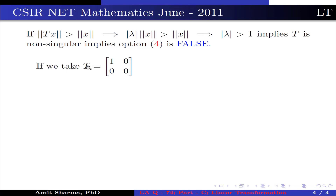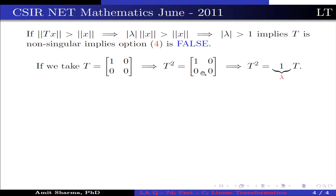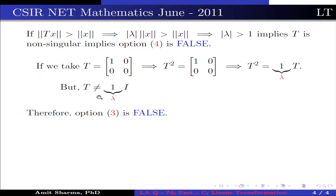If we take T as the 2×2 matrix with elements [1, 0; 0, 0], then T² = [1, 0; 0, 0], which implies T² = 1·T where λ = 1, but T is not equal to 1·I. Therefore option 3 is false.